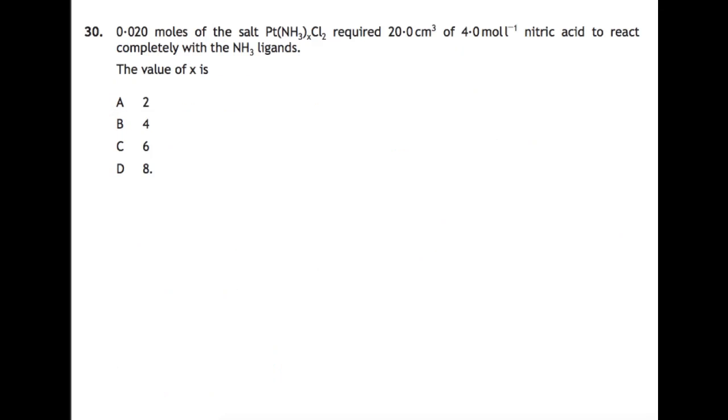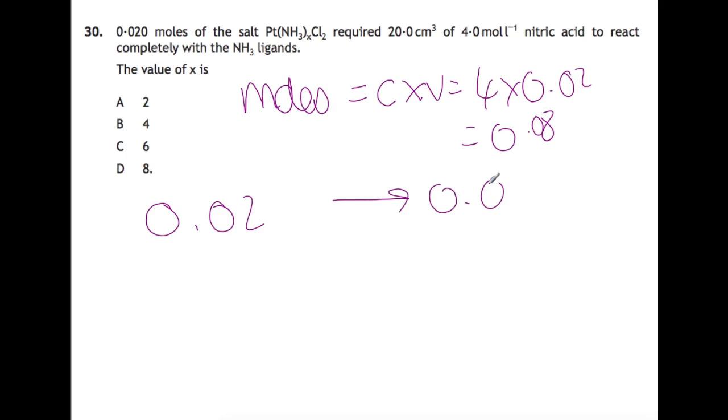And the final question in this multiple choice section is 0.02 moles of the salt Pt(NH3)xCl2 required 20 centimeters cubed of 4 molar nitric acid to react with all of the NH3 ligands. What is the value of X? So if we work out our moles of acid. So we had 0.08 moles of acid reacting. And we had 0.02 moles of our salt requiring 0.08 moles of the acid. So that is a 1 to 4 ratio, which would imply that we must have had four NH3s in here to react with each of those. So the answer is B.